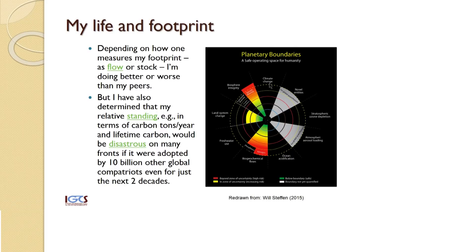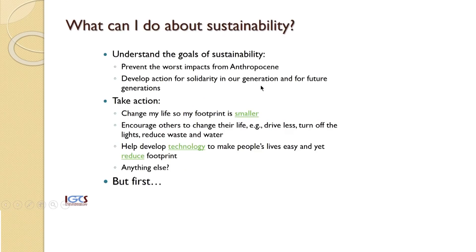It turns out that the use of resources around the world is not uniform. Some people living in certain countries might be consuming a lot more and therefore expending a lot more emissions than others. This kind of analysis helps to determine where one is standing in relation to others on the planet.